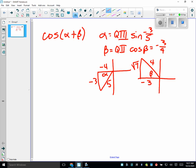So, now that I have my triangles drawn, is the formula for cosine of alpha plus beta, cosine alpha, cosine beta, minus sine alpha, sine beta? Okay. Do you remember that? Do you remember that or look it up or something?